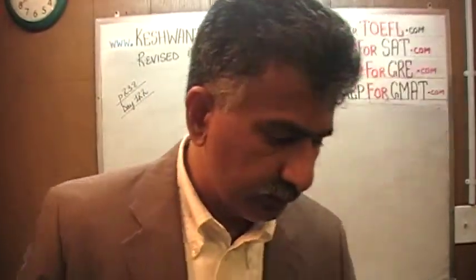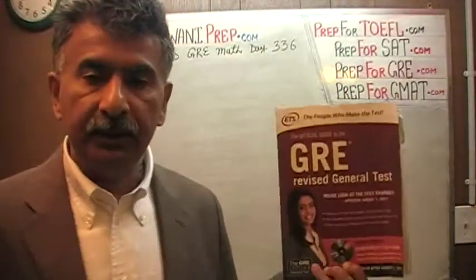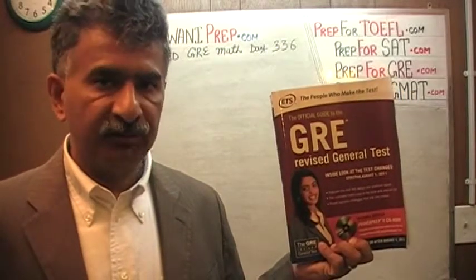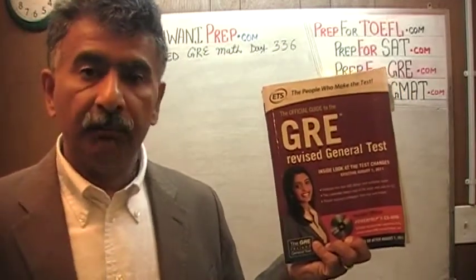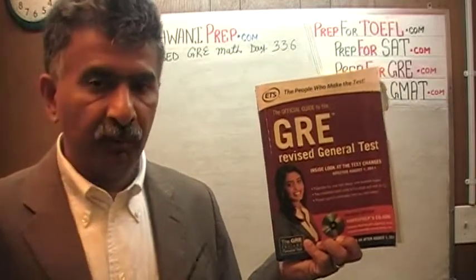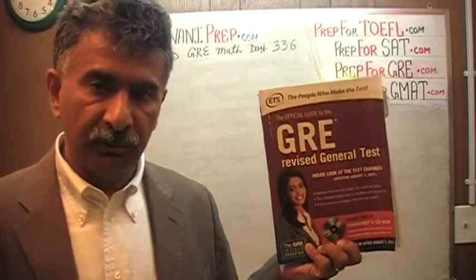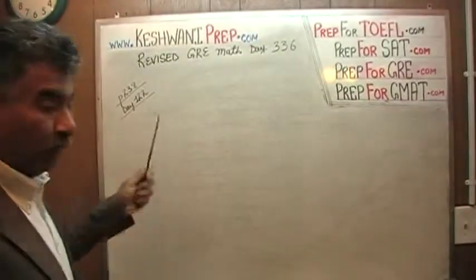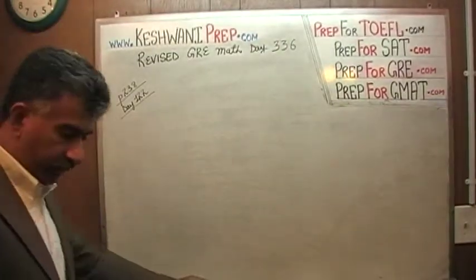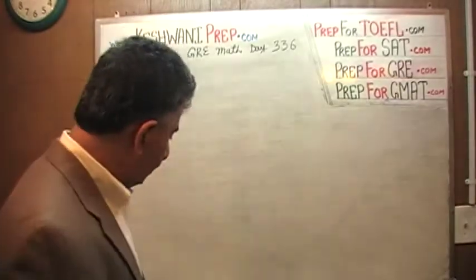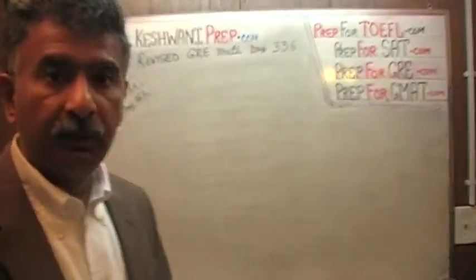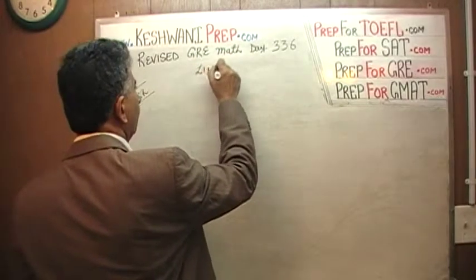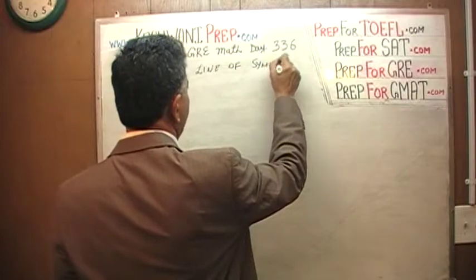This problem on page number 238 is the exact same problem that appeared in the original first edition of the revised GRE. We have already solved every single math problem from that book. If you are interested in watching the original solution, you will find it on day number 122. Today, we are going to learn what is known as the line of symmetry.